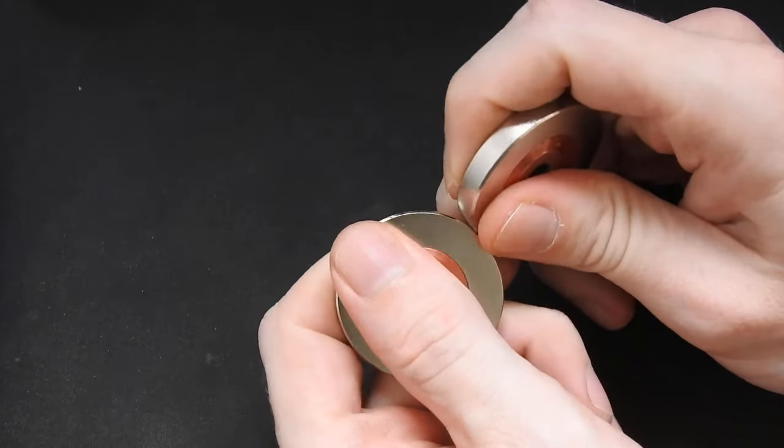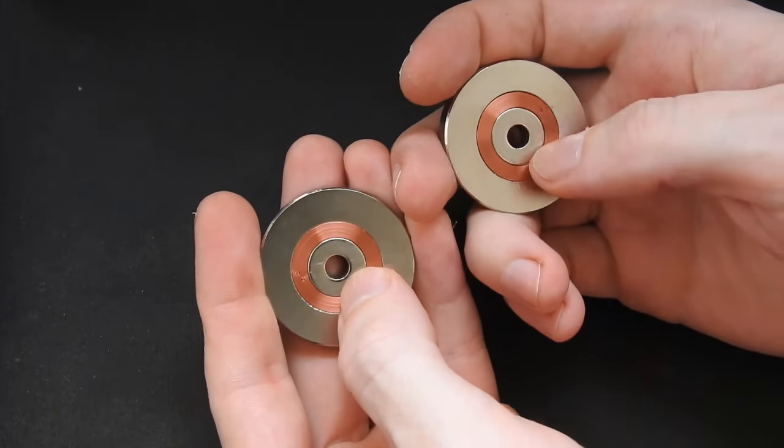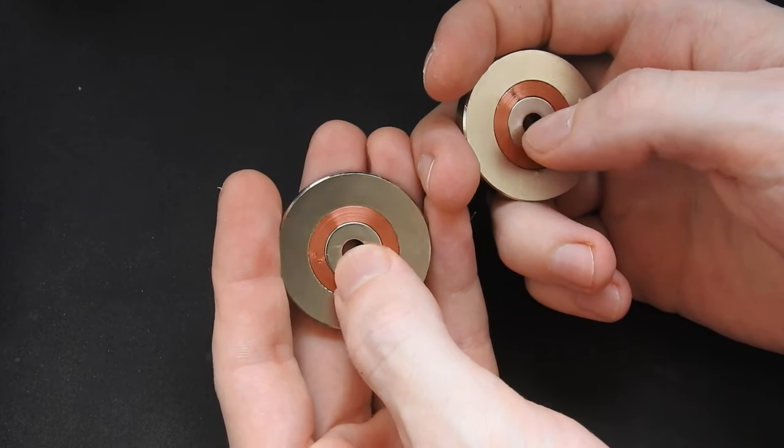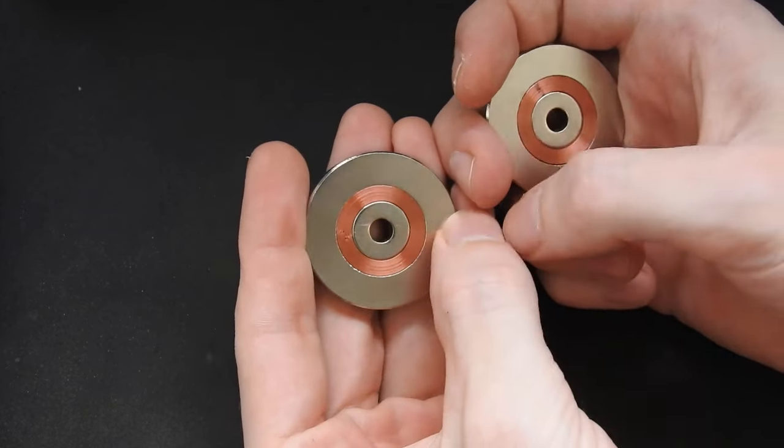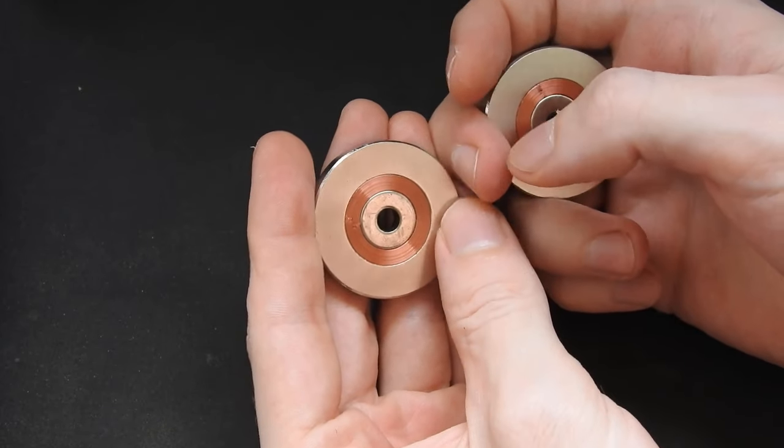And if you wonder why I've got two of them, it's because I've oriented the center magnet with a different orientation with these two arrays, which also forms a very different magnetic field that I will show you now.